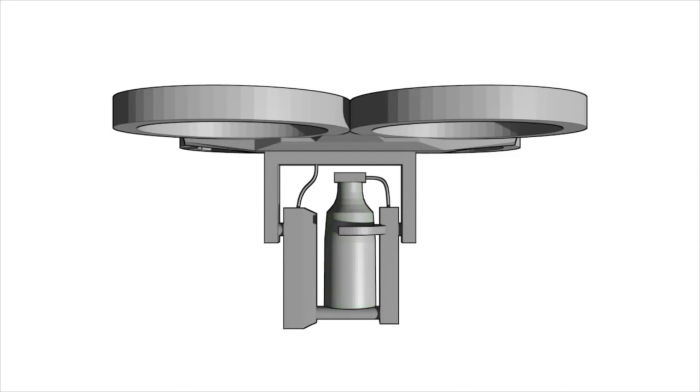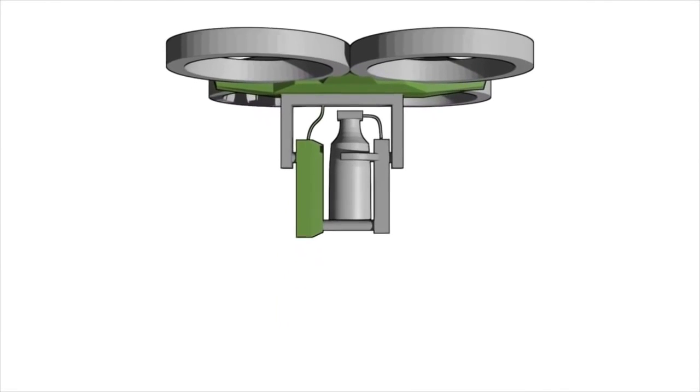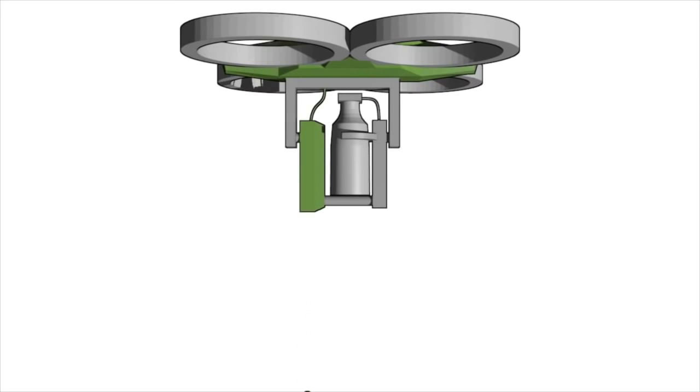The planting system is powered by the UAV, while all guidance and control software is also housed in the UAV. Once the UAV has reached the designated planting location, a signal is sent from the UAV to the planting system via the integrated circuitry, activating the planting mechanism and deploying a seed pod.